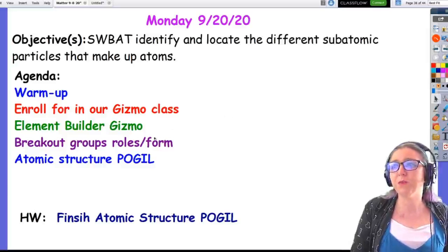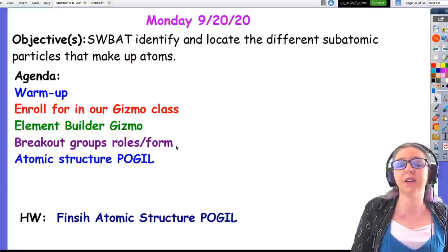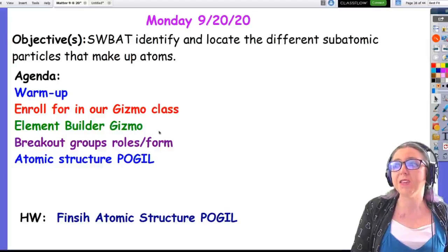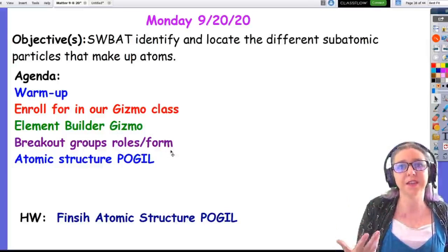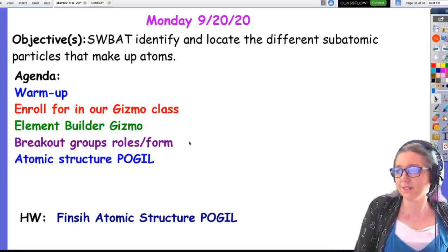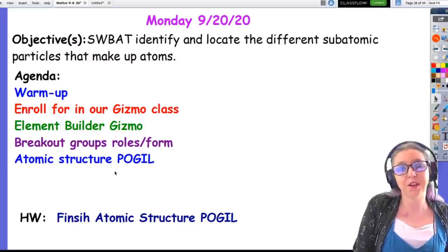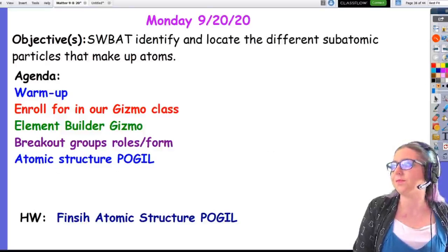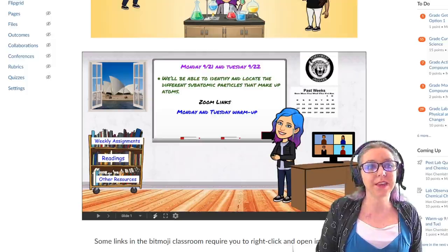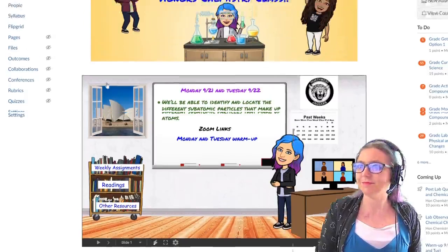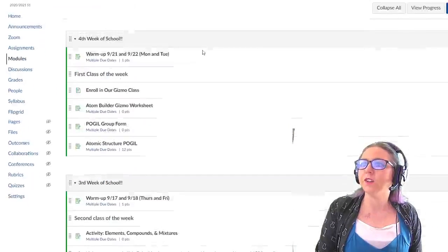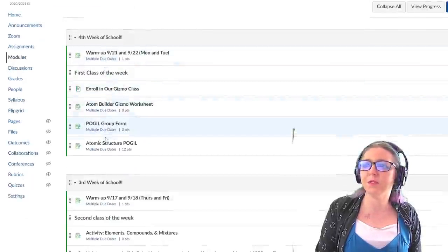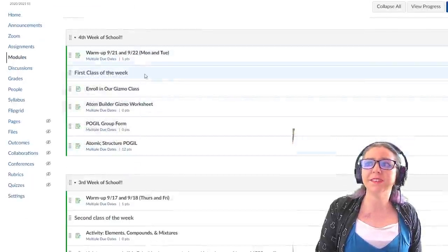After the gizmo, we re-went over our roles and our expectations for our breakout rooms. We even had a new Google form to help you assign roles and reflect on the breakout room progress. You were given time to work in your groups on the POGIL. If you go to our Canvas classroom, go to our modules. I also want to point out, I hope people have started to notice, I always list these in the order that we go through them in class.